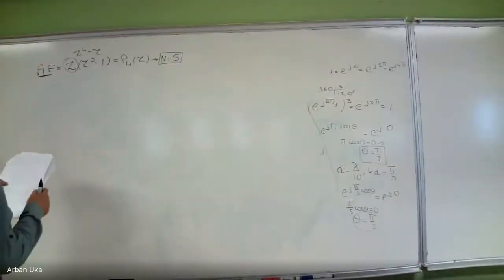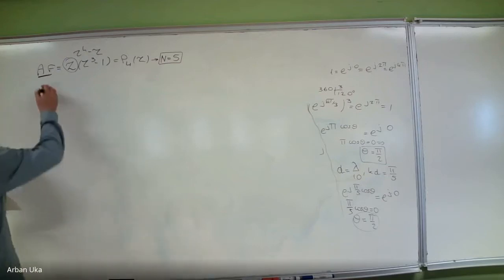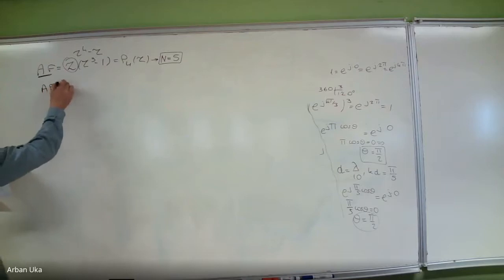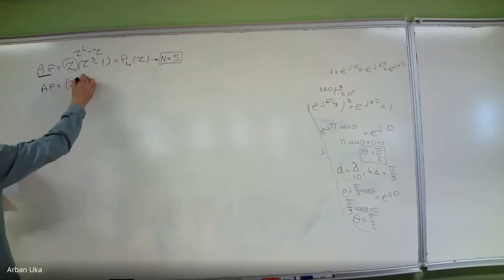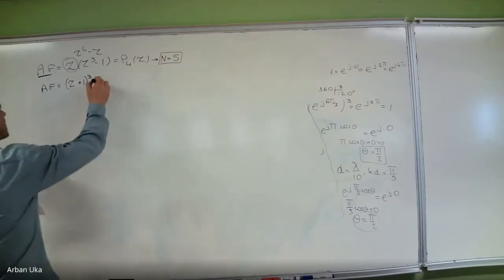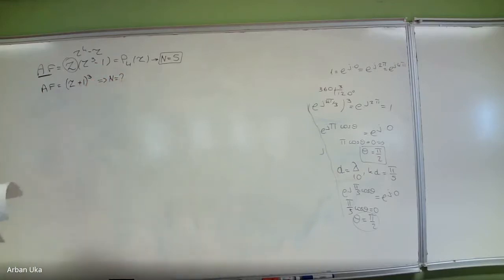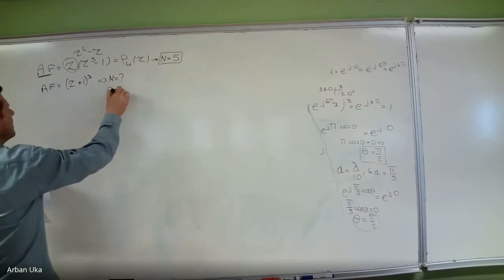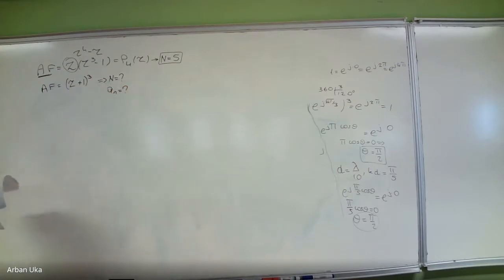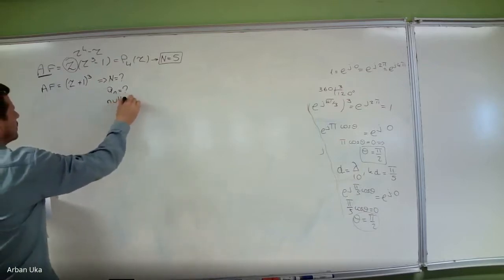Let's assume we have a different array factor. Previously we did another array factor, but now let's assume we have (z+1) all cubed. And now let's try to determine: find n and find the a_n's. Let's try to determine all of these, and let's also find what are the nulls.